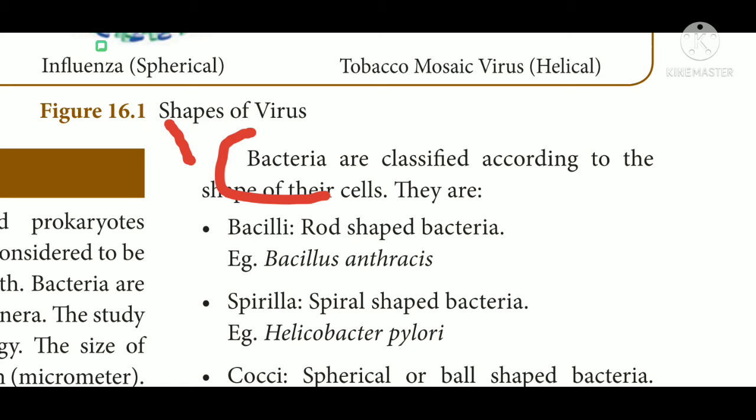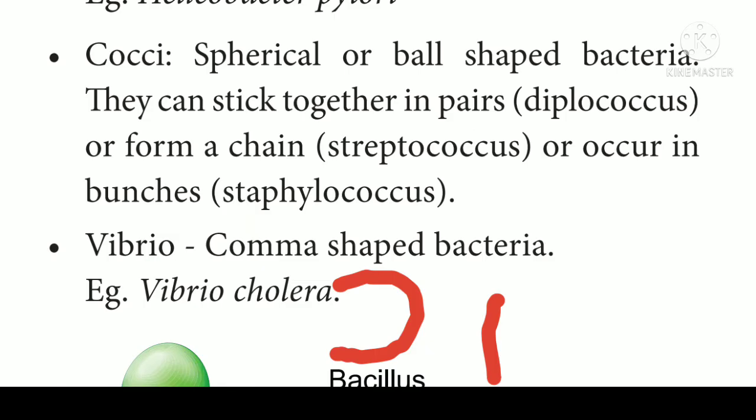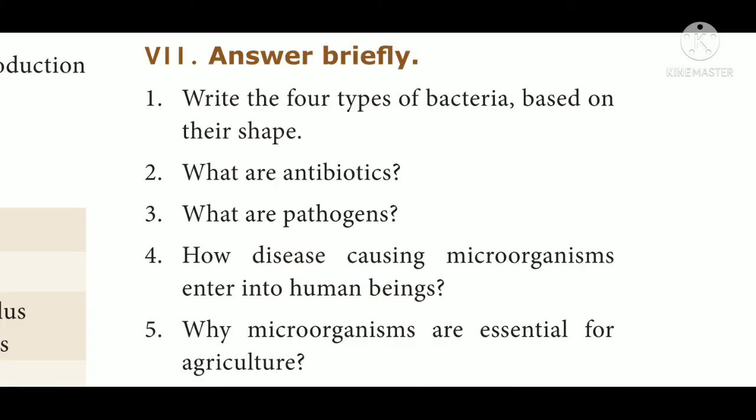Spirilla — spiral shaped bacteria, e.g. Helicobacter pylori. Cocci — spherical or ball shaped bacteria, occurring together in pairs (Diplococcus), forming a chain (Streptococcus pneumoniae), or occurring in bunches (Staphylococcus). Vibrio — comma shaped bacteria, e.g. Vibrio cholerae.